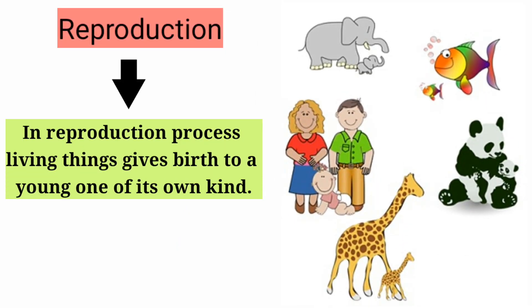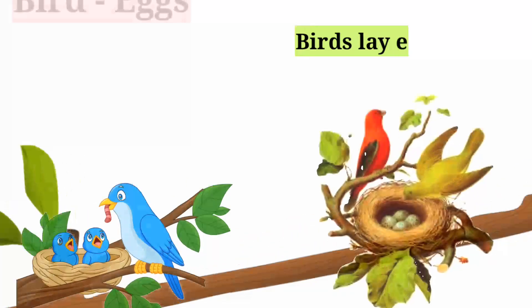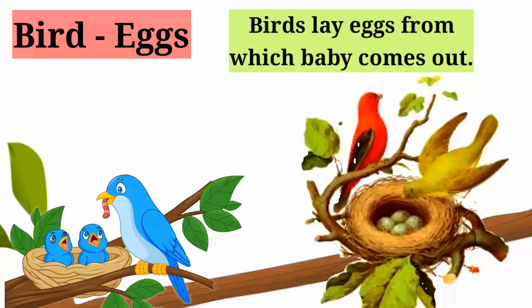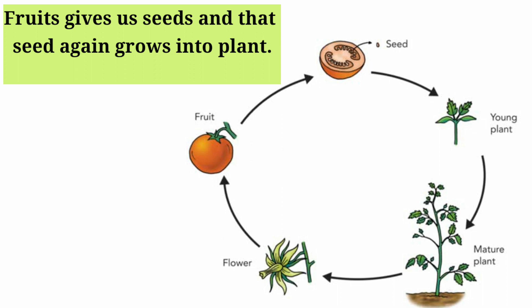Reproduction: In the reproduction process, living things give birth to a young one of its own kind. A woman gives birth to a baby. Birds lay eggs from which a baby comes out. Fruits give us seeds and that seed again grows into a plant.